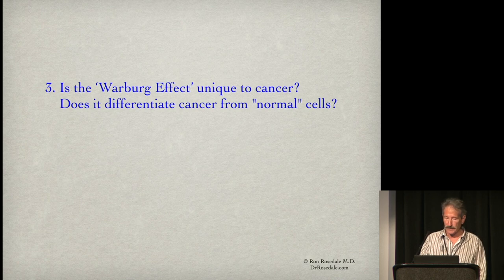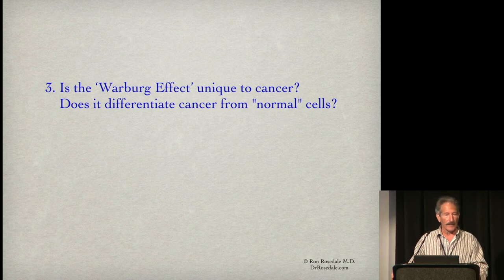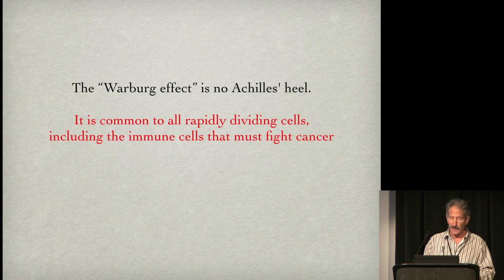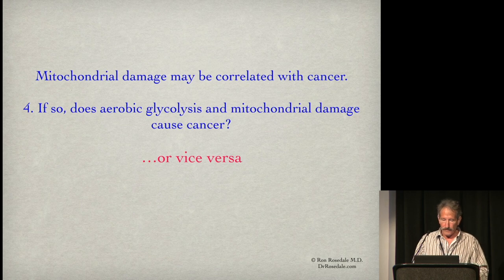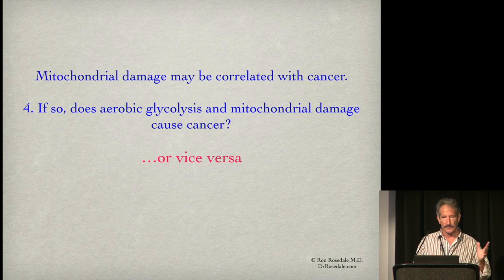Is the Warburg effect unique to cancer — does it differentiate cancer from normal cells? Absolutely not. It's found in all rapidly dividing cells, including T killer cells, NK cells, and all immune cells that rapidly divide to fight infection. They have an almost identical metabolism to cancer. When we're a fetus, the cells start rapidly dividing with the same metabolism and use aerobic glycolysis. The Warburg effect is no Achilles heel — it's common to all rapidly dividing cells, including immune cells.